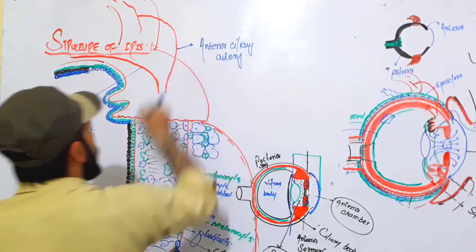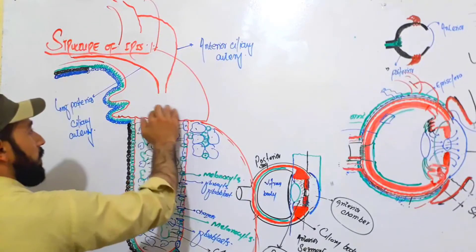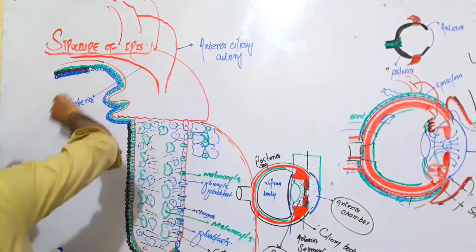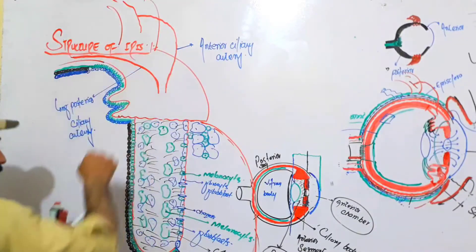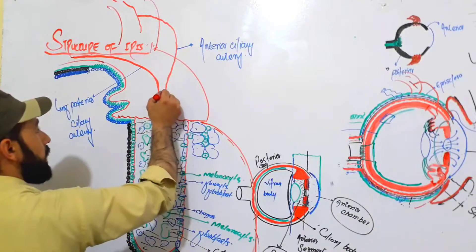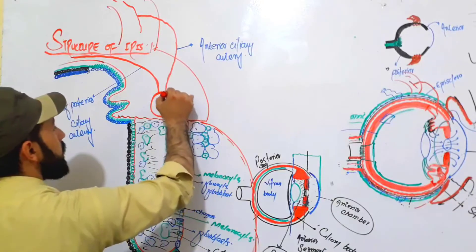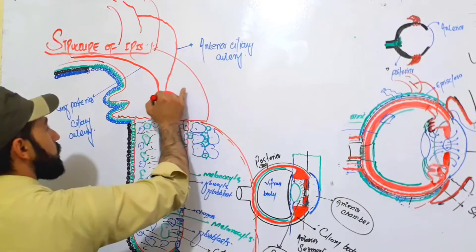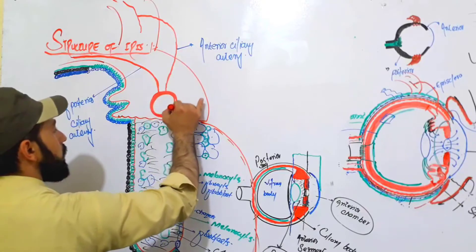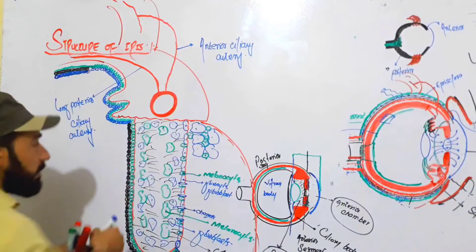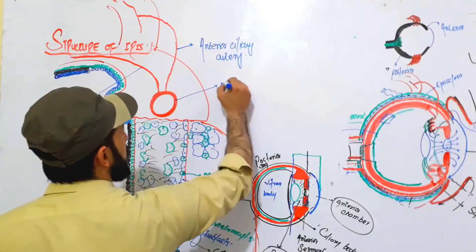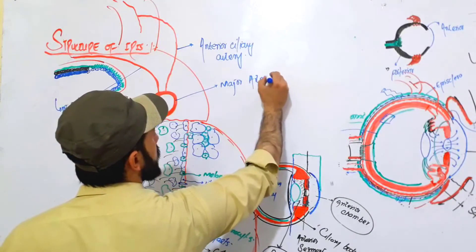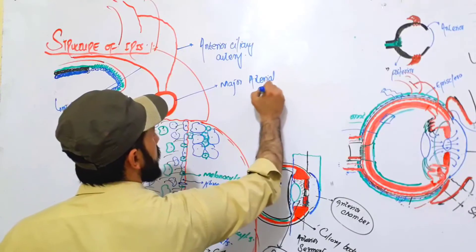Both the anterior ciliary artery and the long posterior ciliary artery will join at the basal part, at the base of the ciliary body, and they will make a circle here. This circle is called the major arterial circle.